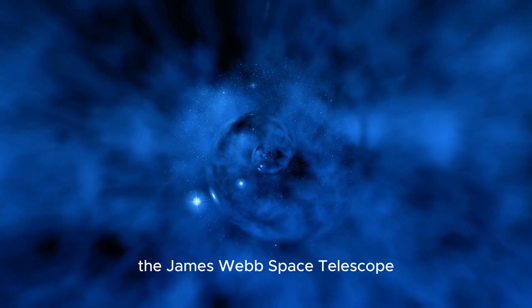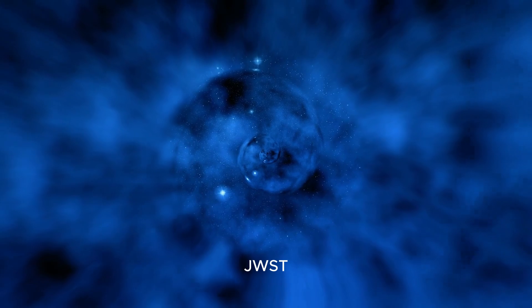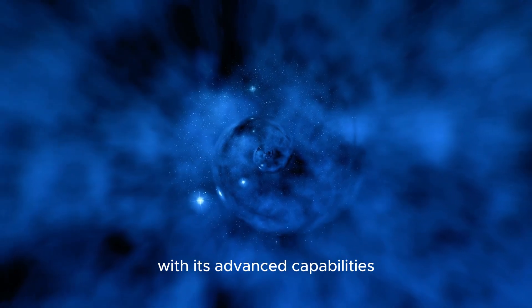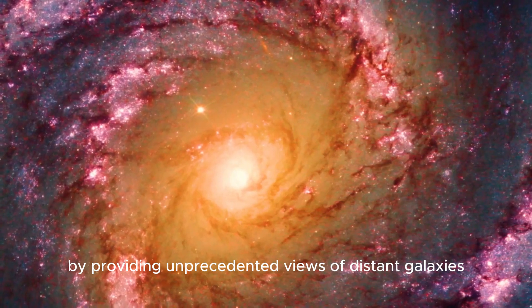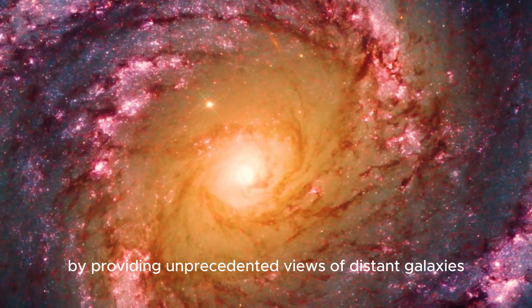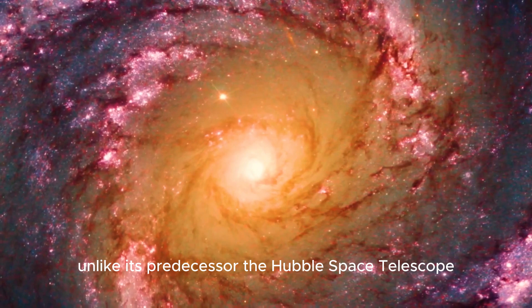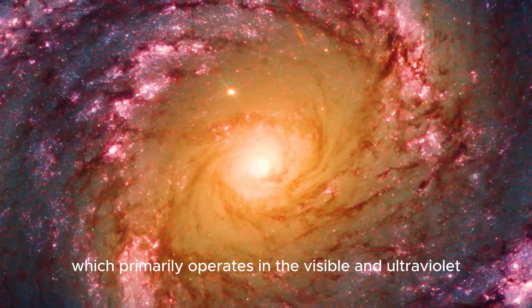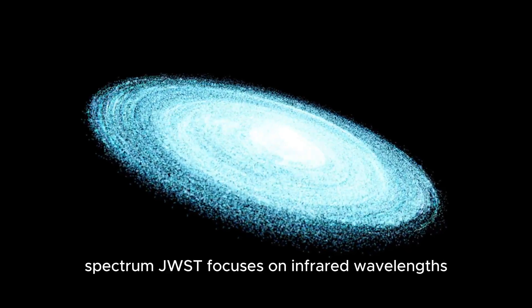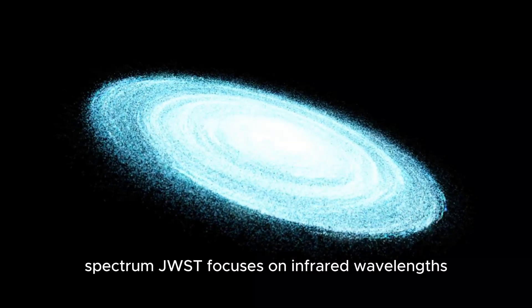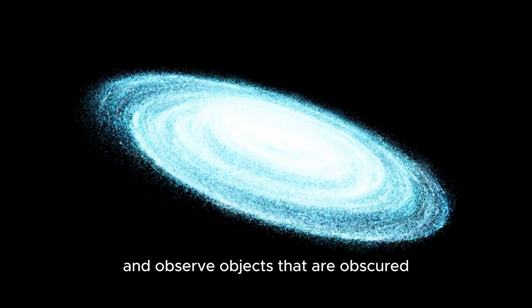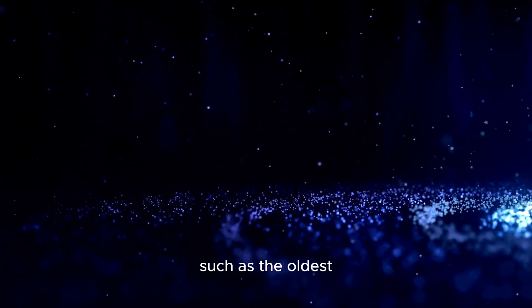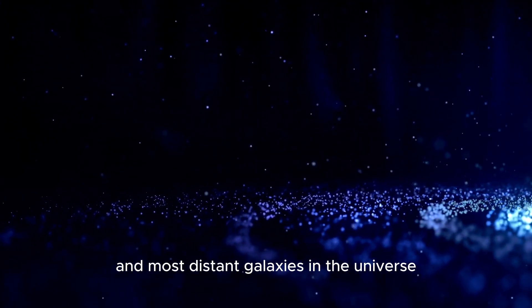The James Webb Space Telescope, JWST, with its advanced capabilities, has revolutionized our understanding of the universe by providing unprecedented views of distant galaxies. Unlike its predecessor, the Hubble Space Telescope, which primarily operates in the visible and ultraviolet spectrum, JWST focuses on infrared wavelengths. This allows it to peer deeper into space and observe objects that are obscured or faint in visible light, such as the oldest and most distant galaxies in the universe.